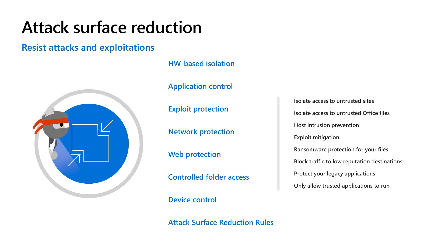Next on the list, we have network protection. I think this is something like SmartScreen in the box. Everyone's probably seen that big red screen that comes up when you're using Edge, saying you probably shouldn't go to that website because it's known to be bad. In network protection, we're taking that down to the operating system level — we're able to block calls externally to known bad URLs at the OS level. That's really important for third-party browsers or apps that are calling known bad sites.